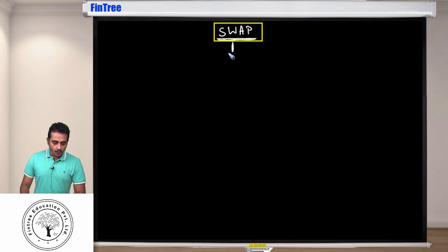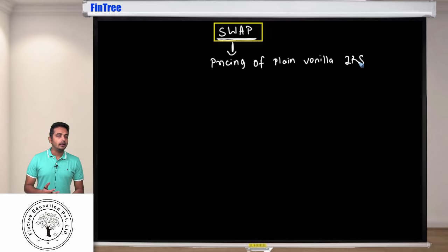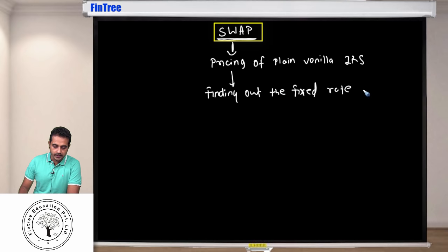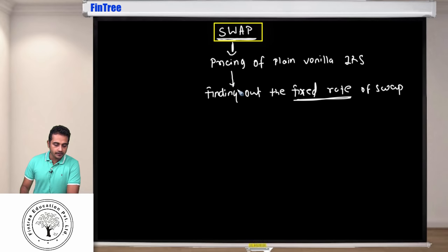The first section within swap is pricing of the swap — pricing of a plain vanilla interest rate swap. A plain vanilla interest rate swap is where one party is paying fixed and the other party is paying floating. What pricing of swap essentially means in simple language is finding out the fixed rate of the swap. So when we say one party will pay fixed, what is going to be that fixed rate — is it going to be 4%, 5%, 6%? Finding that fixed rate is pricing the swap.